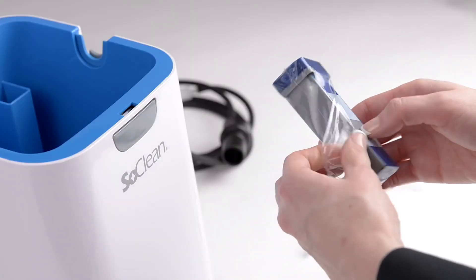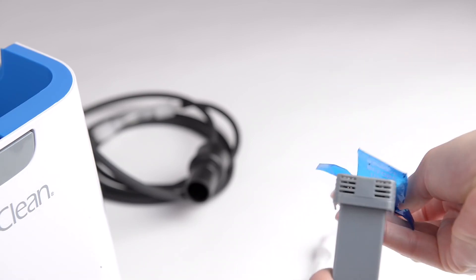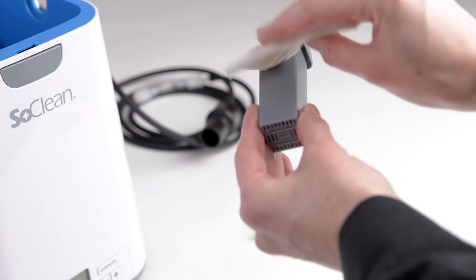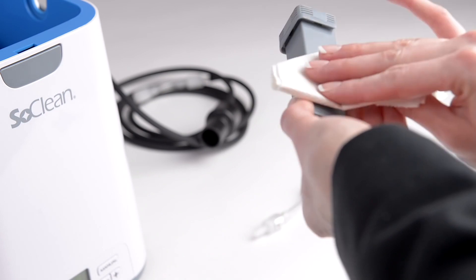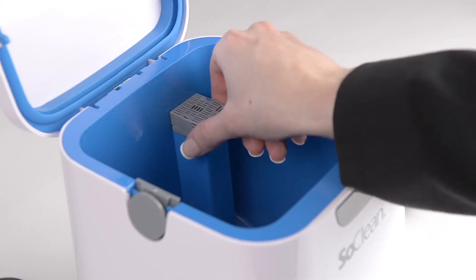Remove all protective plastic and tape from the new filter. You may see some black particles on the filter or on your hands. This is normal from settling during shipping and can be wiped off. Place the new filter into the SoClean.